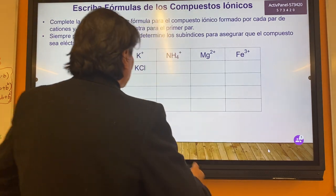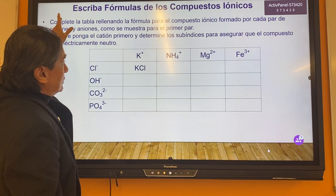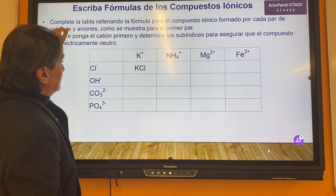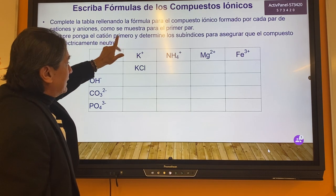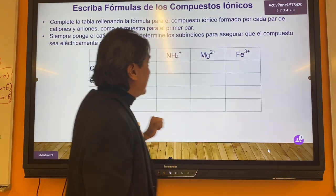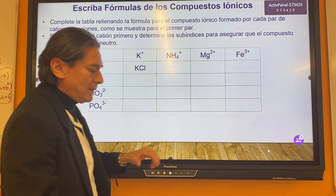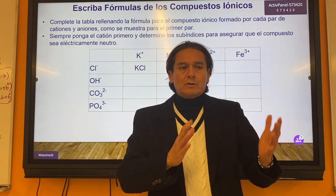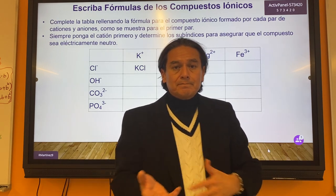What the instructions indicate here is: complete the table, writing the formula down for each ionic pair. Remember to always put the cation first, determine the subscript so that the compound is neutral. We're looking at the purpose of an ionic reaction — it makes a salt. It takes a metal and a non-metal to provide you a charged form of the product.